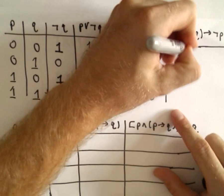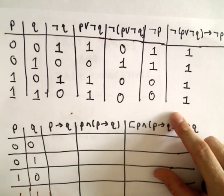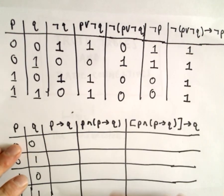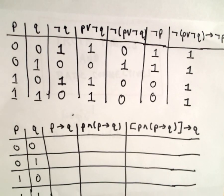Well, I don't see a one and then a zero anywhere. So in this case, I'm going to have that this statement is true, true, true, true. So this compound statement is going to be true for all values of P and Q.